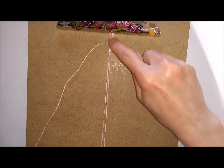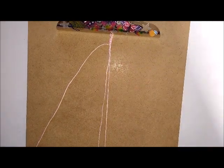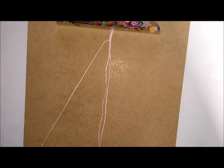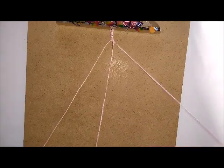Once you've started your pattern with your hitch knots, take your cords from the bottom of the board and add a bead to this outside cord here.